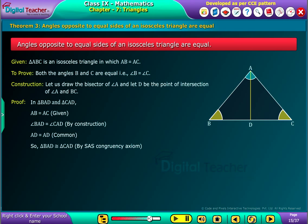So, triangle BAD is congruent to triangle CAD by SAS congruency axiom.